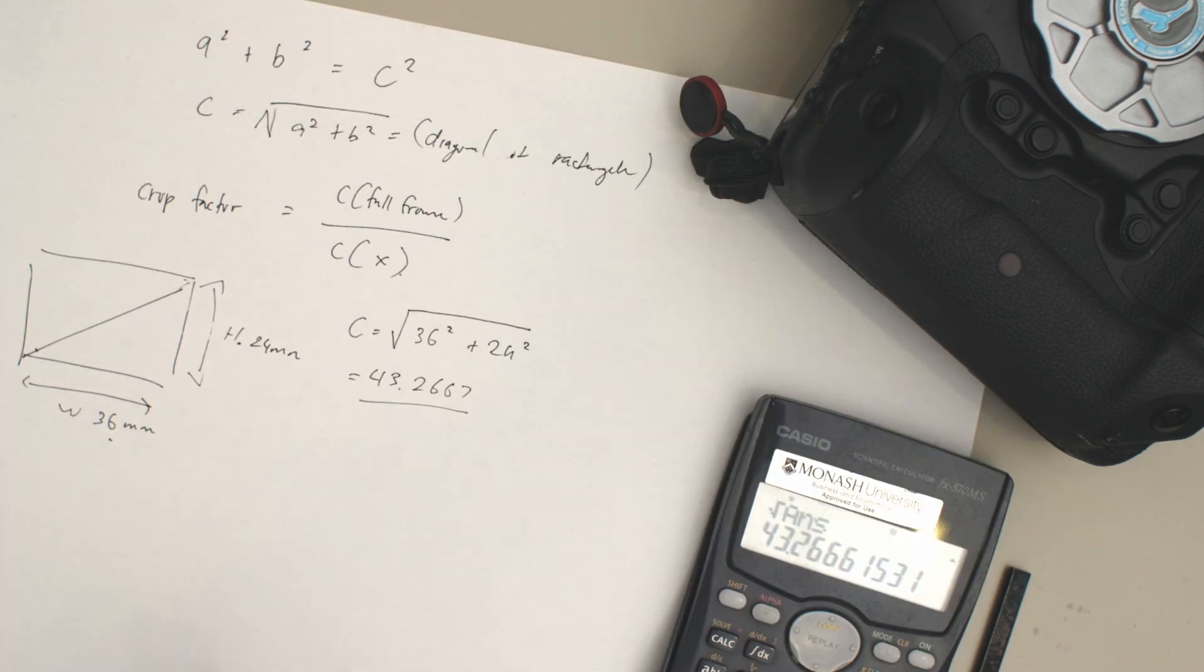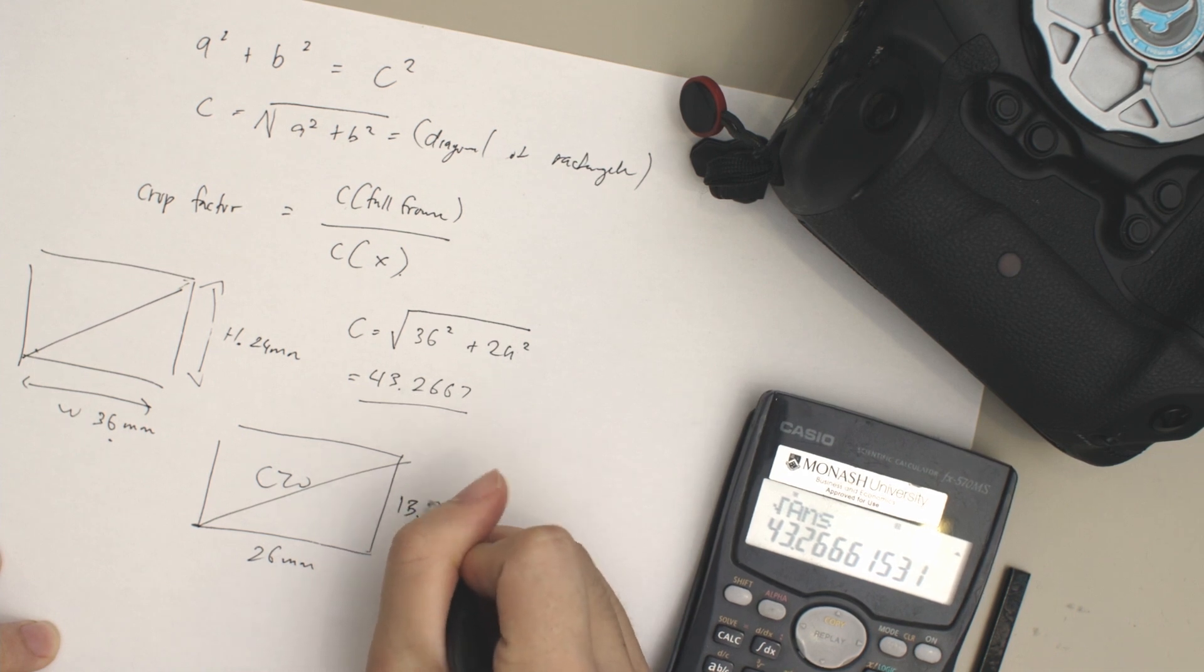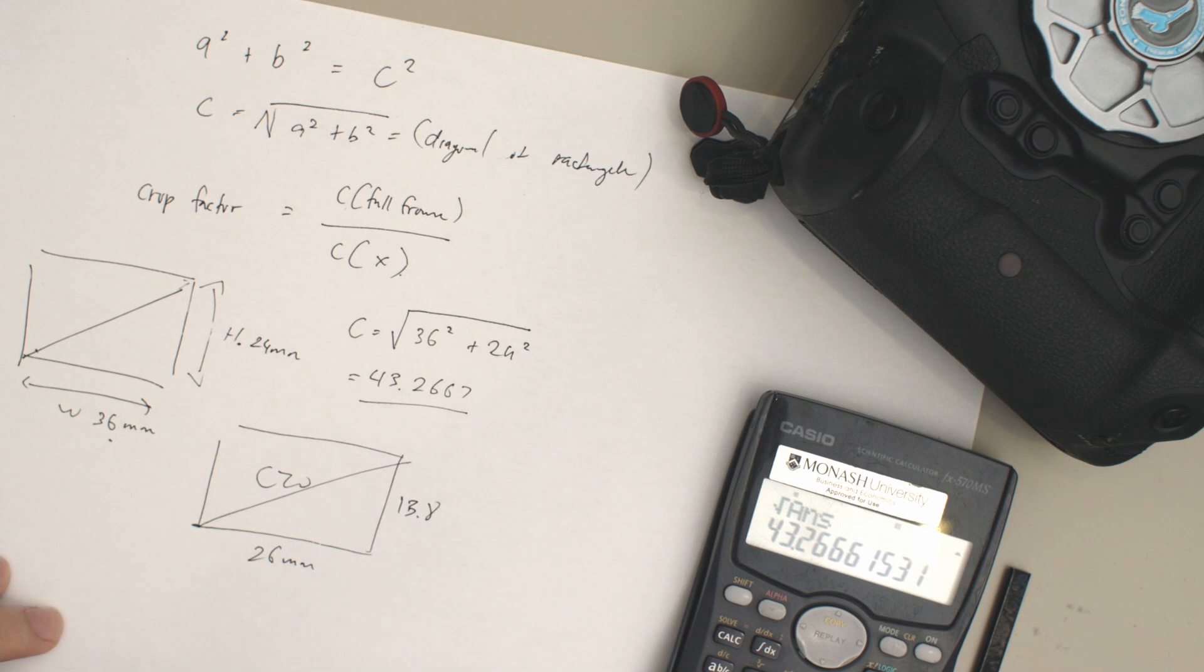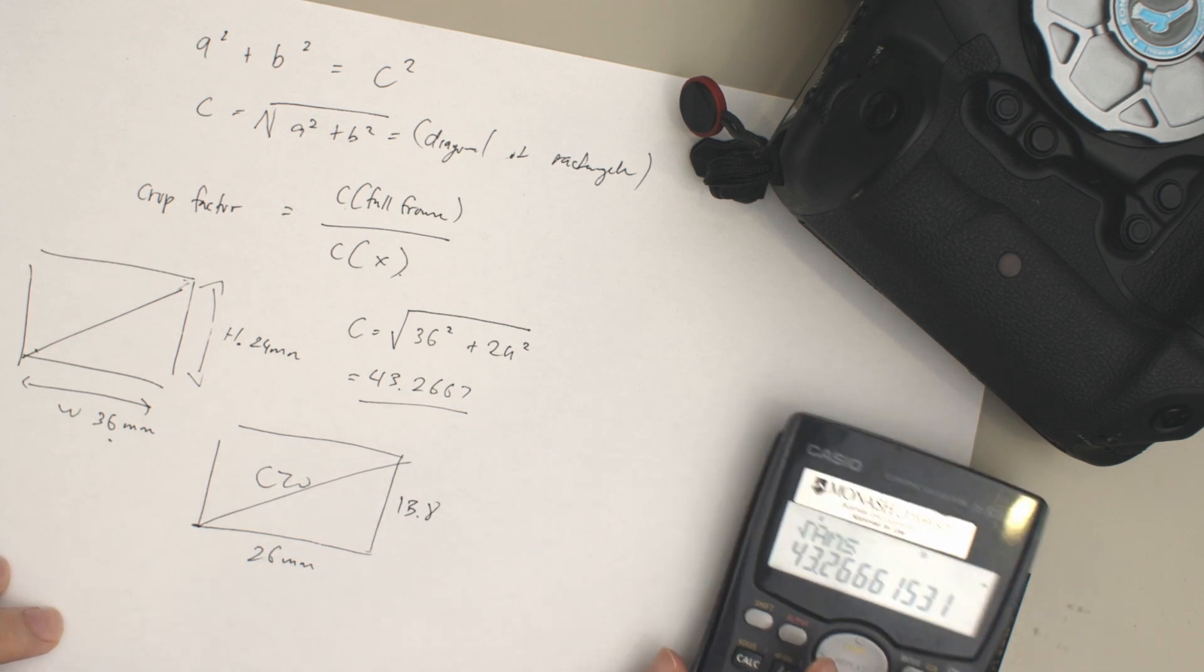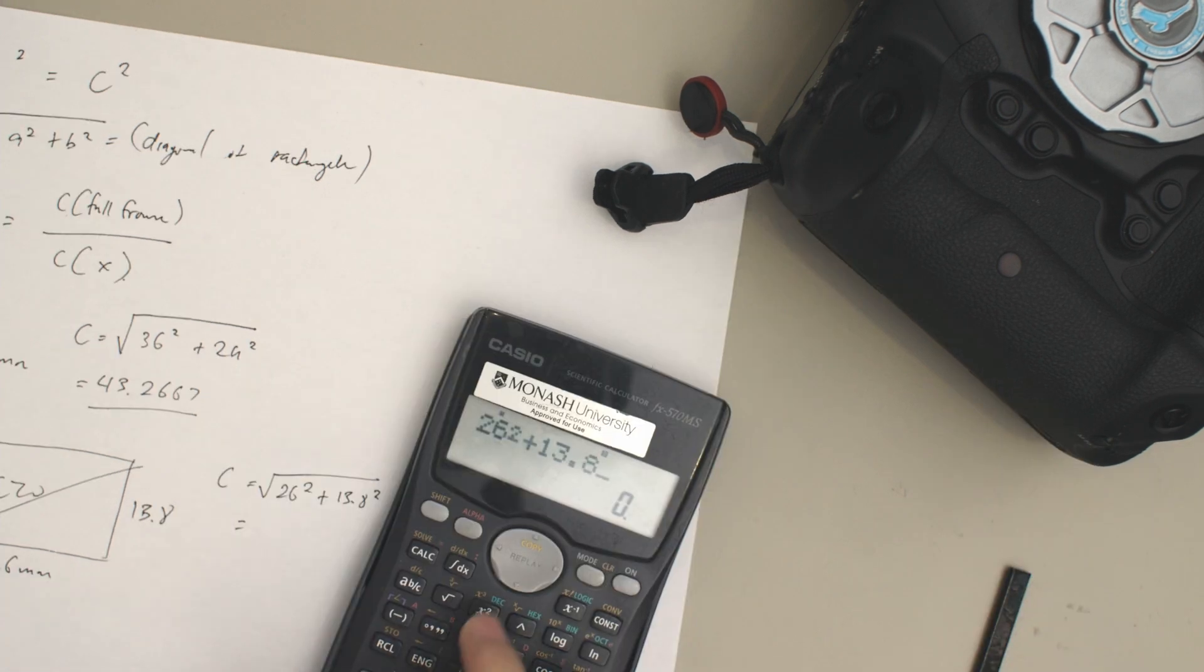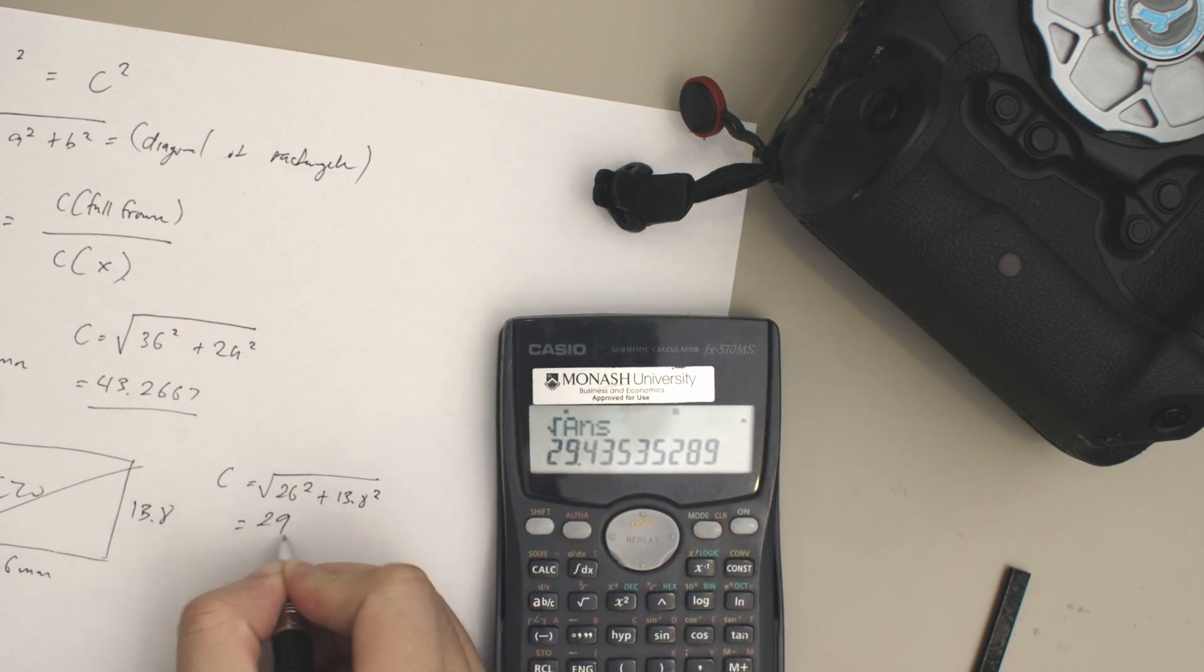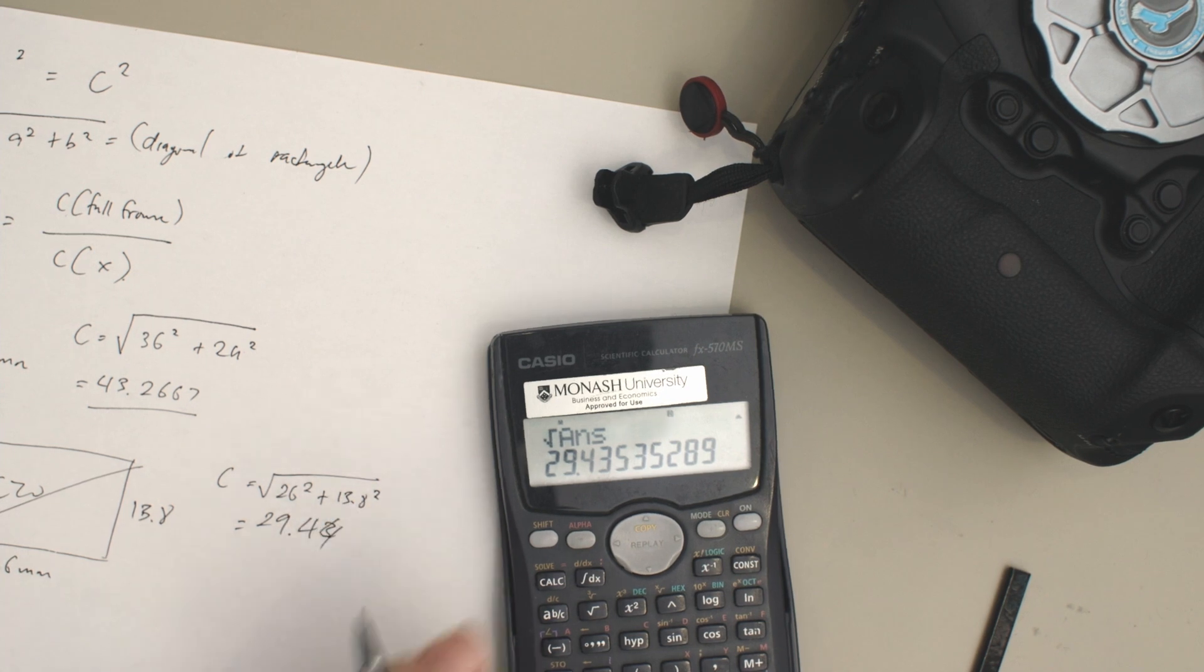Now we're going to figure out the camera that we're looking for. We're looking for the crop factor of the C70, and the sensor size is 26 millimeters by 13.8. Obviously I didn't actually calculate the sensor, but this is given by Canon. So we already have our values right here, and what we're going to do is input them in: 26² + 13.8², and the square root of that answer is 29.43 or 44.